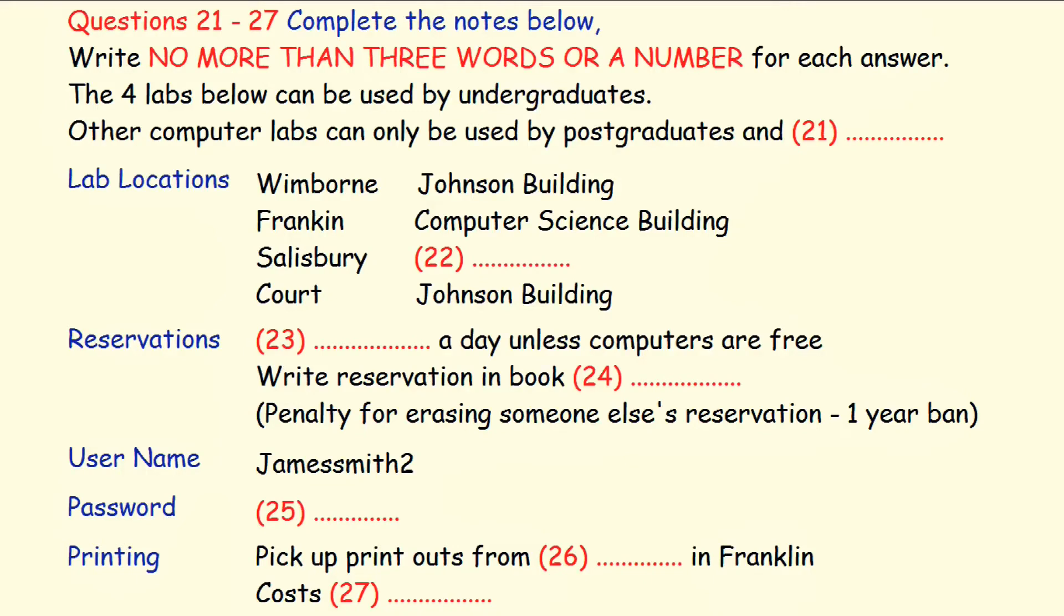Okay. There are four computer labs open to undergraduates. The others can only be used by the staff and postgraduates. The names of the four labs you can use are Winborn, Franklin, Salisbury, and Court. Winborn and Court are in this building, the Johnson Building. Franklin is in the Computer Sciences Building, and Salisbury is in the library.